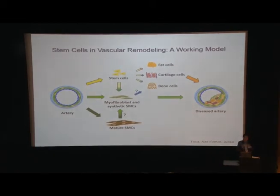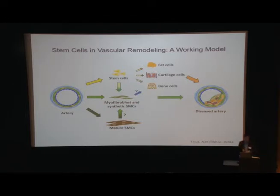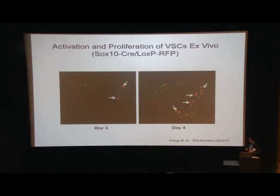Several years ago, we identified a type of vascular stem cell positive for the neural crest stem cell marker SOX10. Here is our working model: a sub-population of smooth muscle cells can differentiate into myofibroblasts or synthetic smooth muscle cells. However, we think stem cells also play an important role. We have shown evidence that these stem cells can differentiate into all lineages related to vascular disease — adipogenic cells, cartilage cells, and bone cells — resulting in calcification in the vessel wall. This is shown in an ex vivo model using lineage tracing mice where SOX10 positive cells are labeled in red.